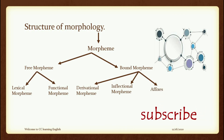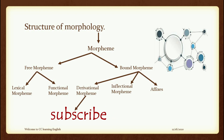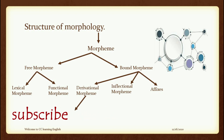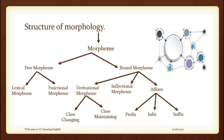Bound morphemes divide into derivational morphemes and inflectional morphemes. And last is affixes morphemes. Derivational morphemes are divided into class-changing and class-maintaining. Affixes morphemes divide into prefix, infix, and suffix. That is the full structure of morphology. I'm sorry I can't go into all details today — I just wanted to give you the frame of morphology.